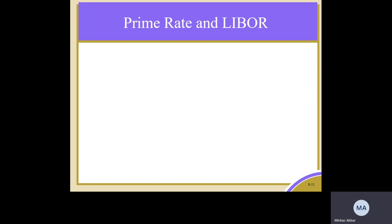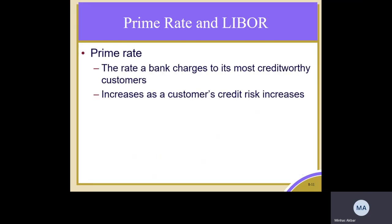Our next topic is Prime Rate and LIBOR. The Prime Rate is the rate a bank charges to its most credit-worthy customers, and it increases as a customer's credit risk increases. Banks can increase the price above the prime rate depending on the credit risk of the borrower.